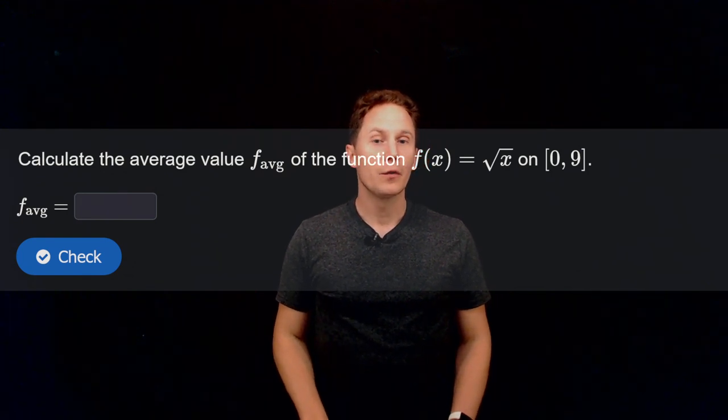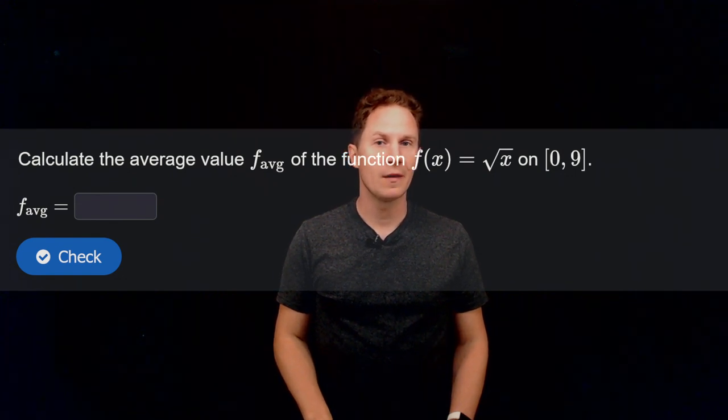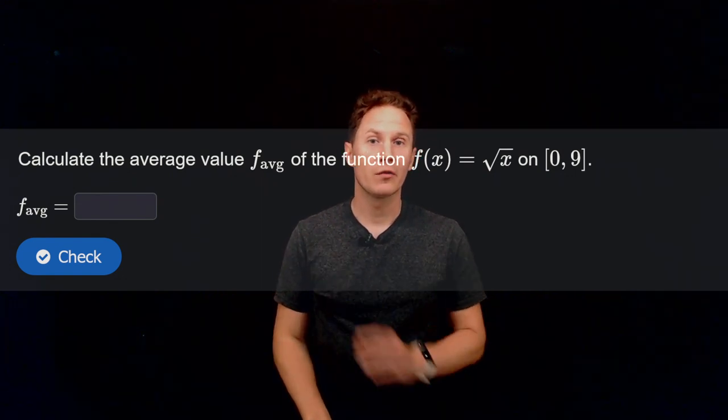Calculate the average value of the function f(x) equals the square root of x on the closed interval between 0 and 9. So pause the video and input your answer in the box.